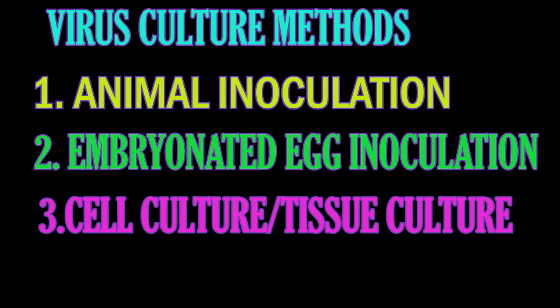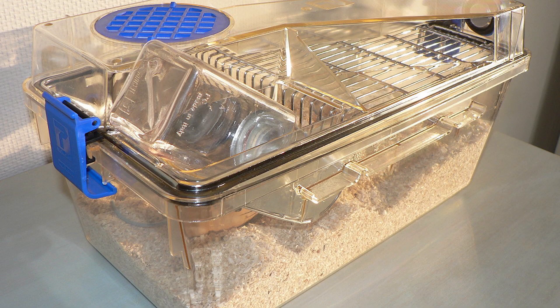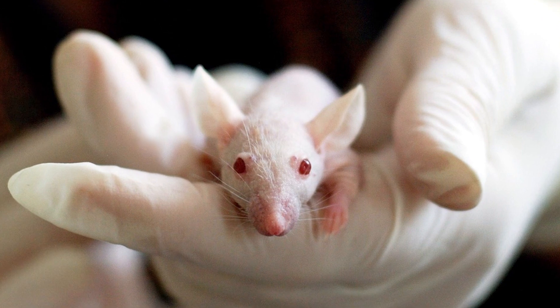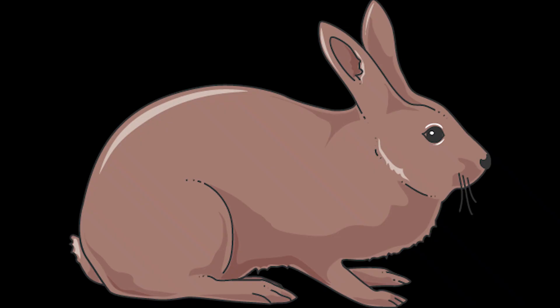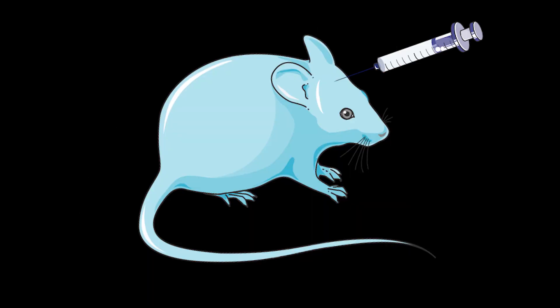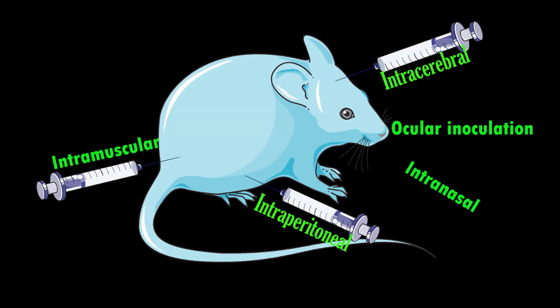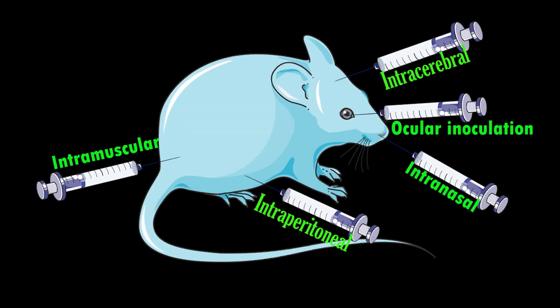One is the animal inoculation method. Lab animals like mice, rabbits, guinea pigs, ferrets, and monkeys are used for animal inoculation. Mice are commonly used with different routes of inoculation: intracerebral, subcutaneous, intraperitoneal, or intranasal. The selection of animal depends on the virus.